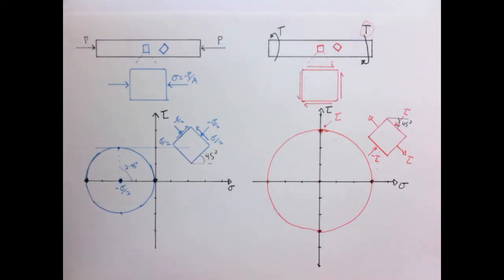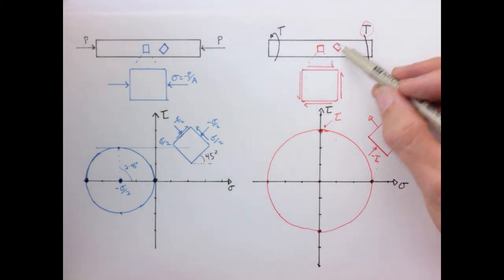So now let's turn to the bar in torsion. So our bar in torsion, if we just review what we just saw, is that if we look at elements which are inclined at 45 degrees, that the element is only subject to either tension or compression, depending on which way I twist the bar and which way I'm looking.